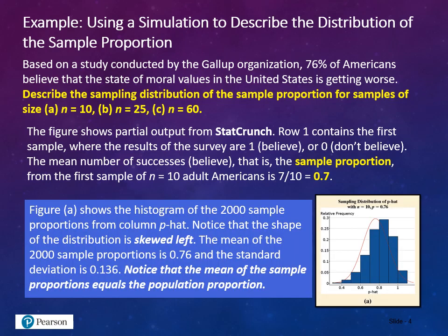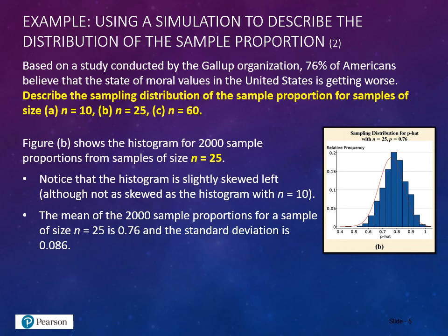Figure A shows the histogram of 2,000 sample proportions from the column p-hat. Notice that the shape of the distribution is skewed left. The mean of the 2,000 sample proportions is 0.76, and the standard deviation is 0.136. Notice that the mean of the sample proportions equals the population proportion. Figure B shows the histogram for 2,000 sample proportions for samples of size n equals 25. The histogram is still skewed slightly left, although not as skewed as with a sample size of 10. The mean is 0.76, and the standard deviation is 0.08.